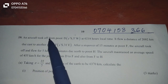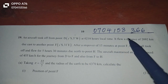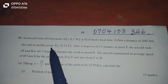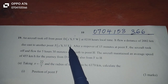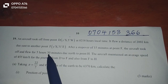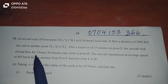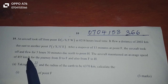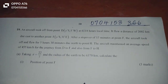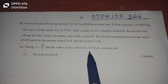The question says that an aircraft took off from point D, Y degrees south, 5 degrees west, at 0018 hours local time. It flew a distance of 2,002 kilometers due east to another point F, Y degrees south, 31 degrees east. After a stopover of 15 minutes at point F, the aircraft took off and flew for 5 hours 30 minutes due north to point H. The aircraft maintained an average speed of 455 kilometers per hour for the journey from D to F and also from F to H. Part A: taking pi to be 22/7 and the radius of the Earth to be 6,370 kilometers.